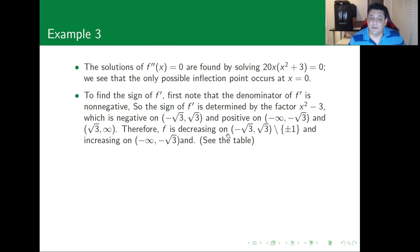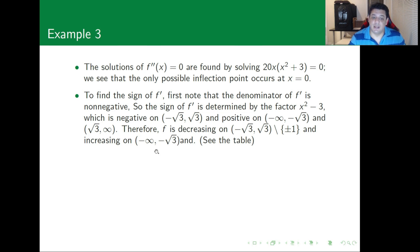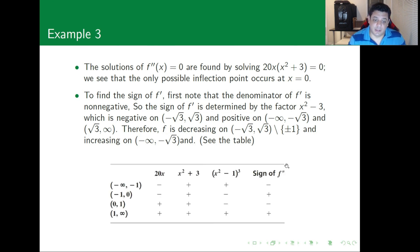x² - 3 is negative on the interval (-√3, √3) and positive from -∞ to -√3 and from √3 to ∞. Hence the function is increasing on (-∞, -√3) and (√3, ∞), and decreasing on (-√3, -1), (-1, 1), and (1, √3), excluding the points ±1.